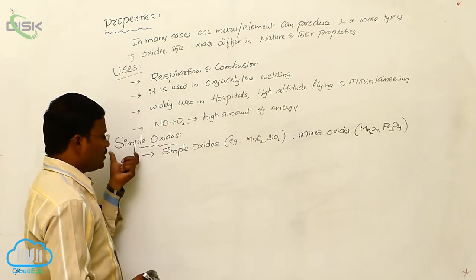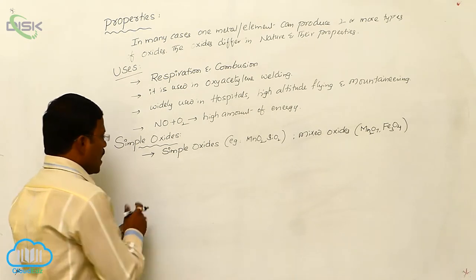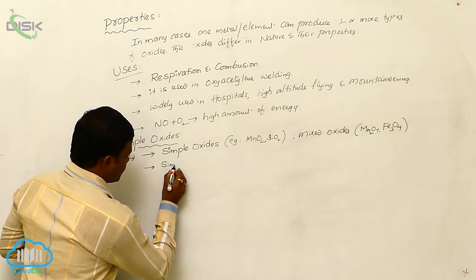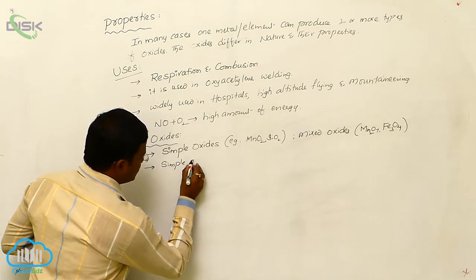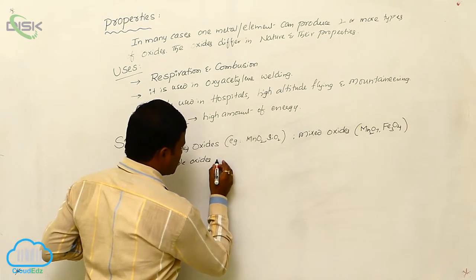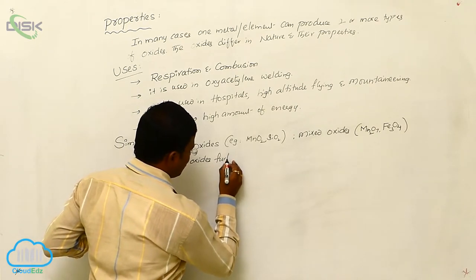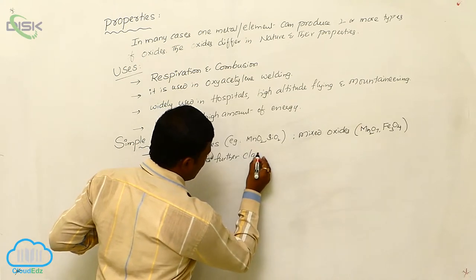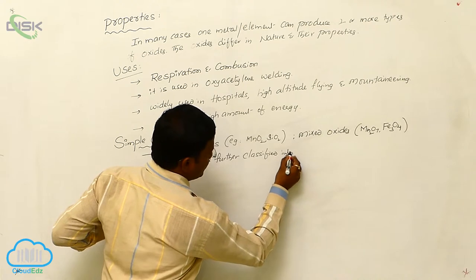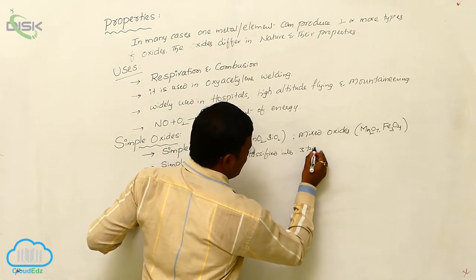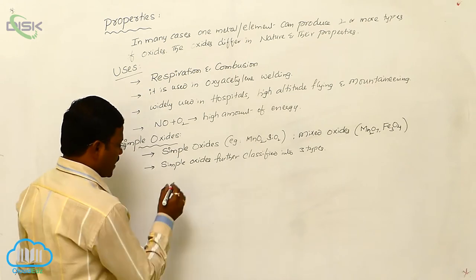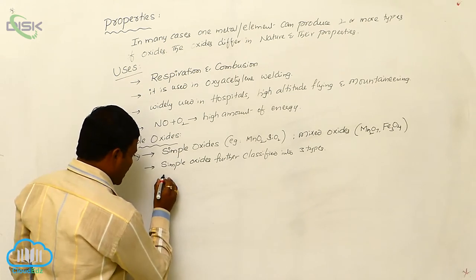But as per our statement, we have to discuss about simple oxides. Again, these simple oxides further classified into three types based on its character. Based on its character. Let us have, what are the three types of oxides?